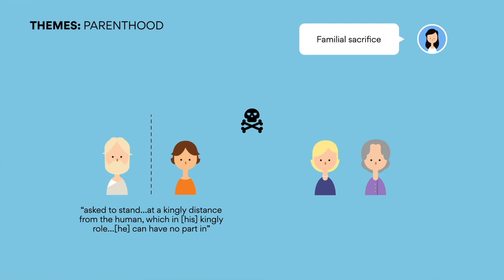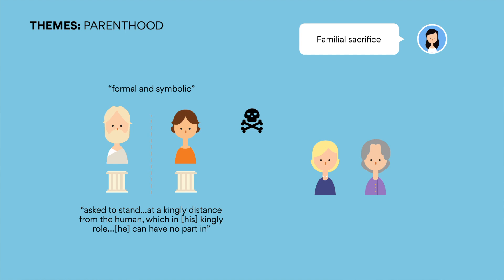Up until Hector's death, Priam has been removed from paternal experiences, a sad truth when he admits that his relationships with his children were merely formal and symbolic, and a part of the splendor and the ordeal of kingship. Malouf demonstrates how Priam's royal obligations have suffocated his role as a father, and consequentially, he has been unable to connect with his family in the way he would desire to.